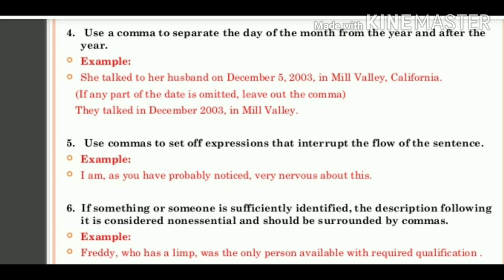Next rule: if someone or something is sufficiently identified, the description following it is considered non-essential and should be surrounded by commas. Means, अगर कोई person या thing already identified है और उसके बारे में non-essential description दी जा रही है — जो sentence के proper meaning के लिए ज़रूरी नहीं था — तो उस non-essential description के पहले और बाद में भी comma का use करेंगे. For example: 'Freddy, who has a limp, was the only person available with the required qualification.' — 'who has a limp' non-essential description है, इसलिए इसे comma से surround किया.